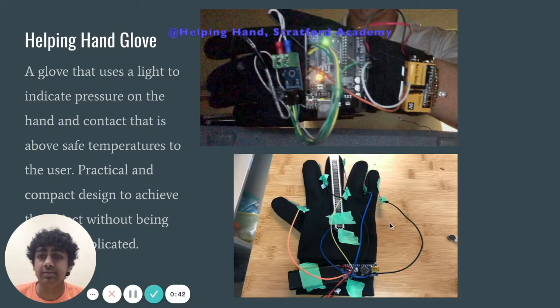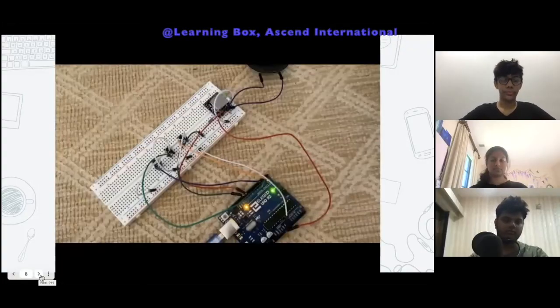Our solution to Mr. Thomas' problem was the helping hand glove, a glove that uses a light to indicate when intense pressure or temperature is coming in contact of the hand. This is what our product would look like from the inside.